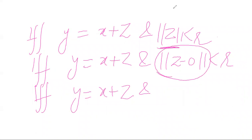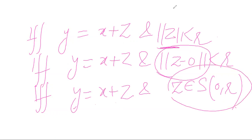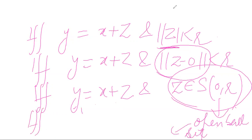This means: when I write norm of z less than R, it refers to all z's which are in the ball — the sphere with center zero and radius R. So y equals x plus z, and z belongs to that ball. Z is coming to the ball S(R), which is the set of all points whose norm is less than R.